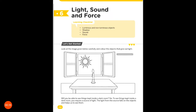In this chapter, we are going to learn about luminous and non-luminous objects — objects which give light and objects which don't give light. We are also going to learn about shadow, sound and force. So we will start today's chapter. Please open your book, chapter 6, light, sound and force, page number 214. Let's get started.